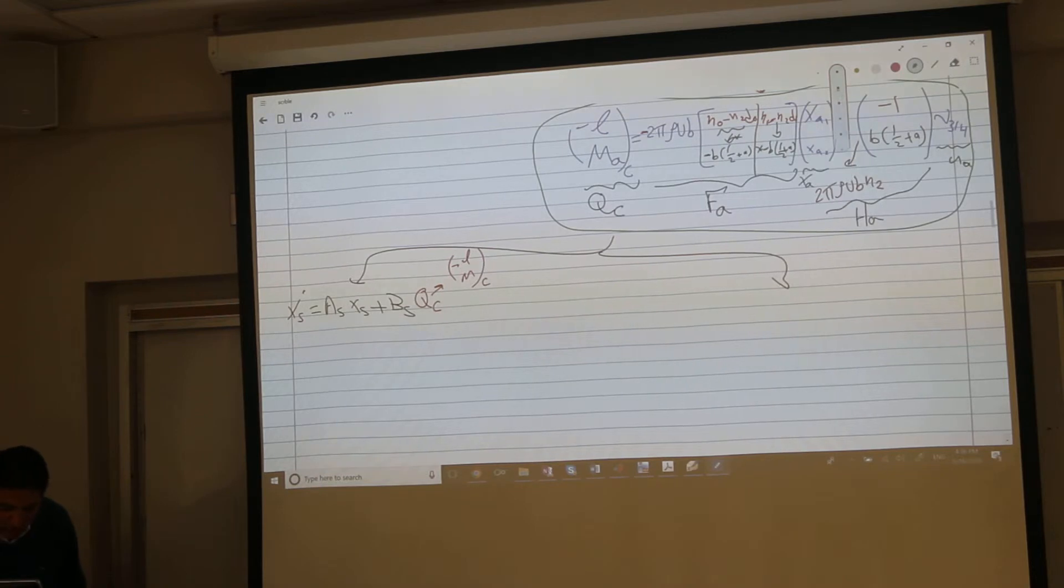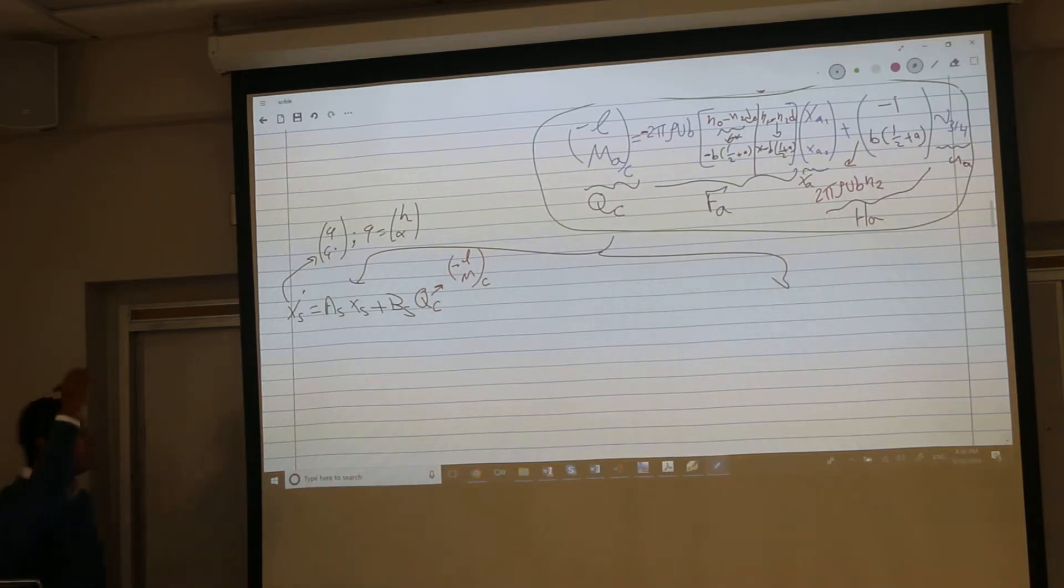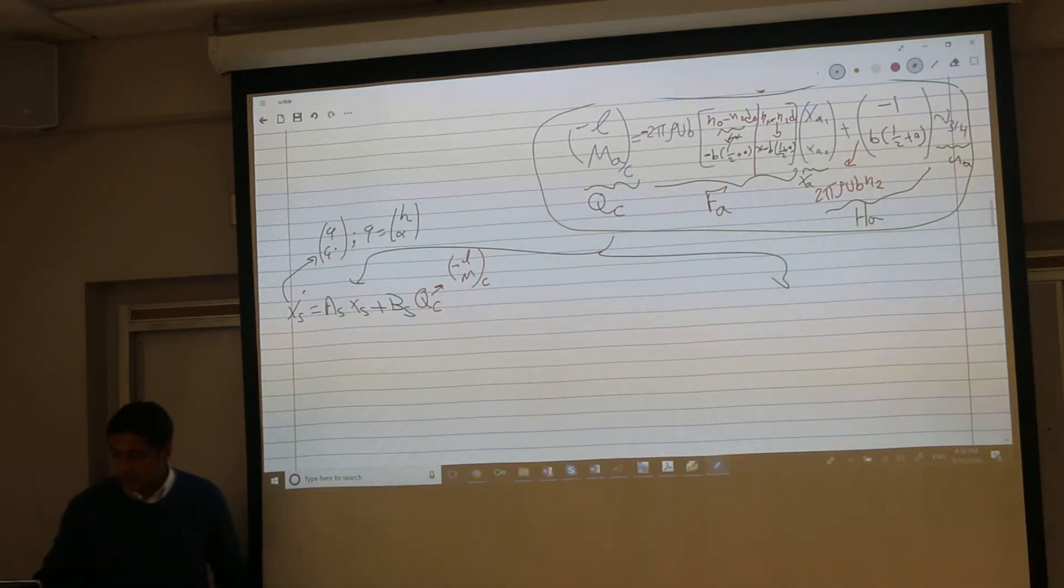And the structural states have meanings, because the way we developed it, it's q and q dot, where q itself is h and alpha. So they are h alpha, h dot and alpha dot.